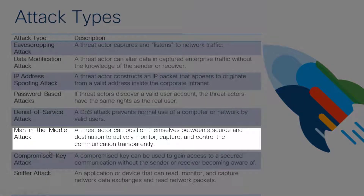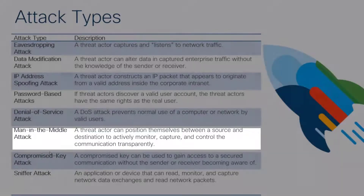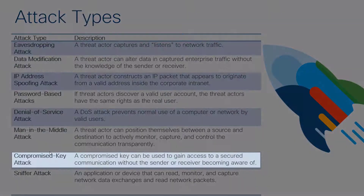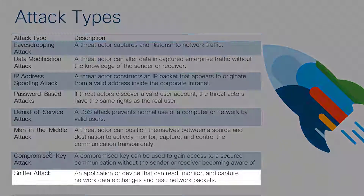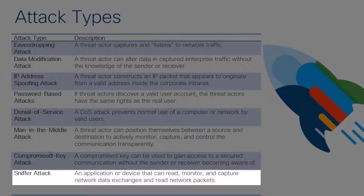A man-in-the-middle attack involves the threat actor placing themselves between a source and destination, actively monitoring, capturing, and trying to control the communication without the sender or receiver knowing. With a compromised key attack, an attacker uses a legitimate key that people don't know has been compromised to gain access to communications or network services. Finally, a sniffer attack — similar to Wireshark — involves a threat actor using an application or physical device to read, monitor, and capture network data being exchanged in real time, grabbing and viewing those messages.